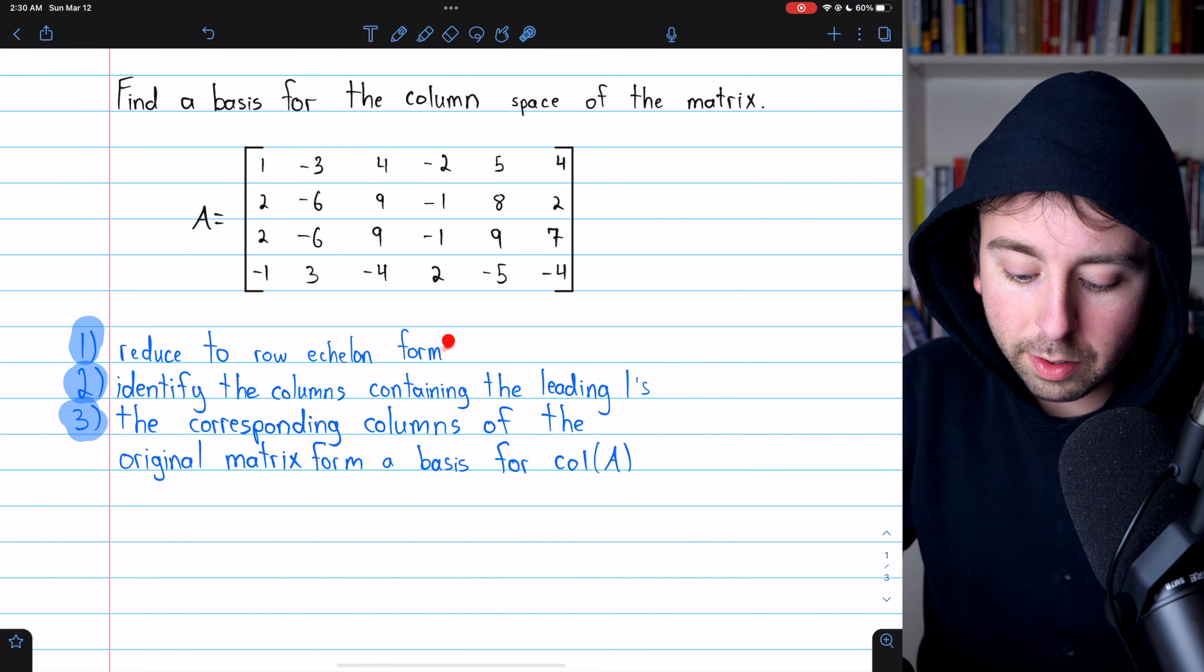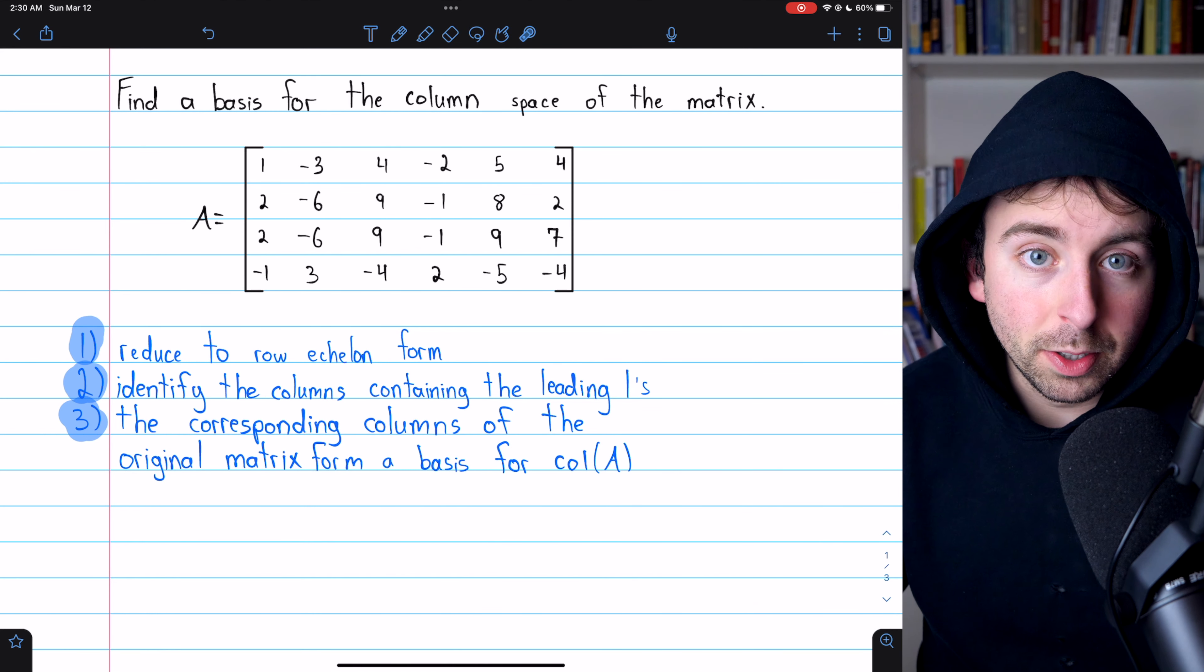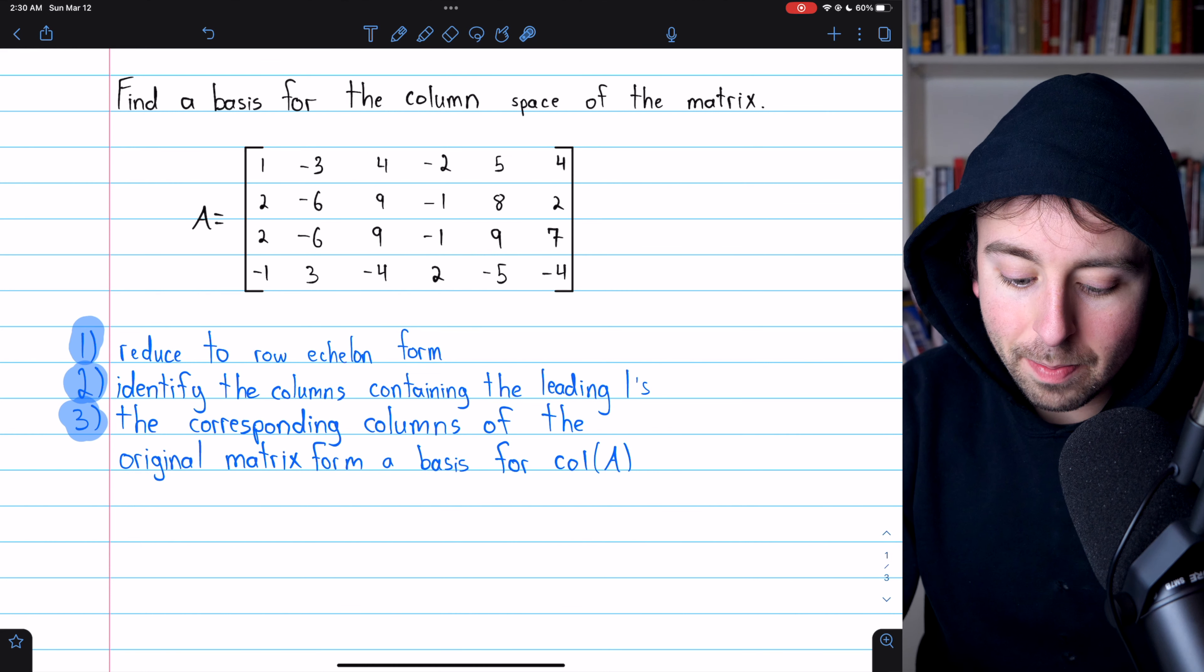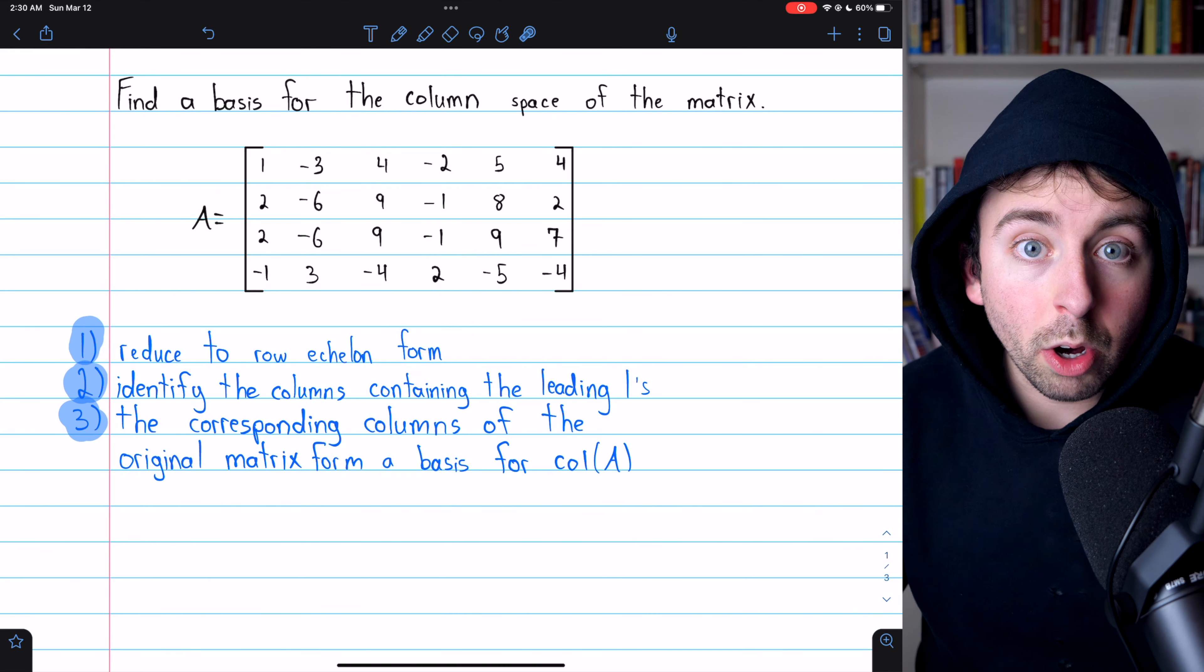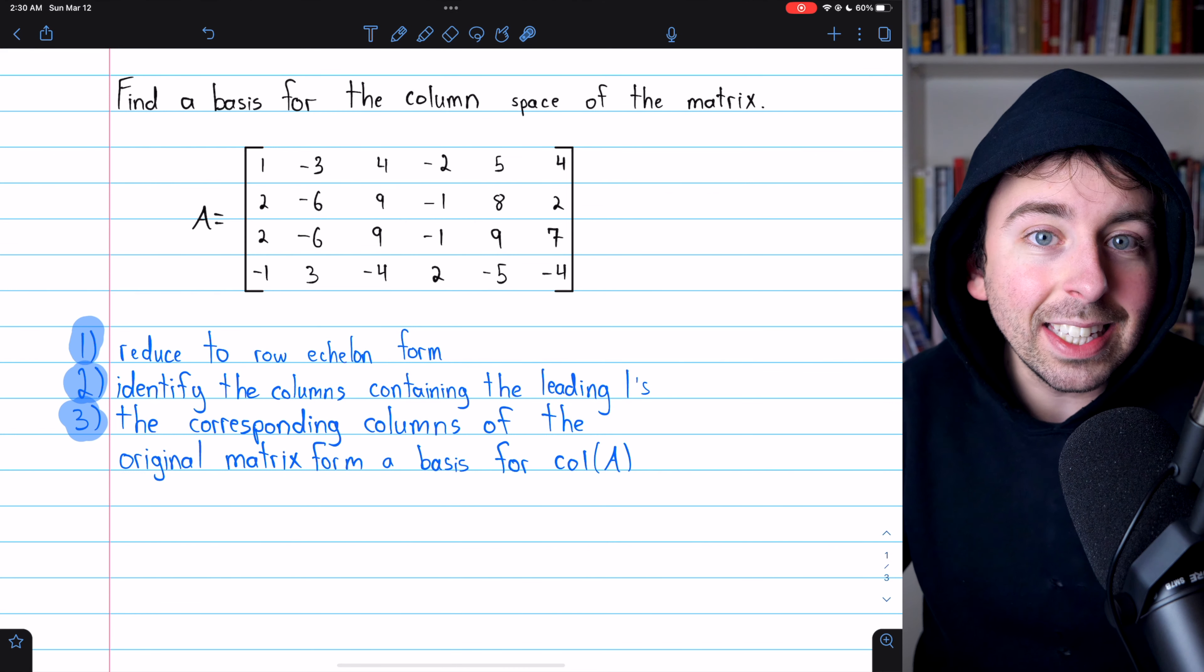First, we'll need to reduce the matrix to row echelon form. However, the column space of this reduced matrix may differ from the column space of the original, so there's a little more work we have to do. We have to identify the columns in the row echelon form that contain the leading ones.